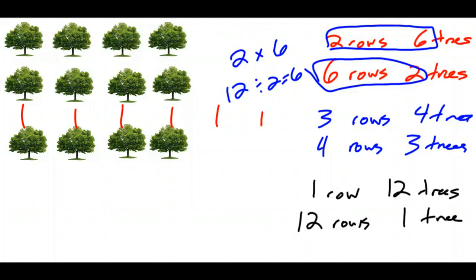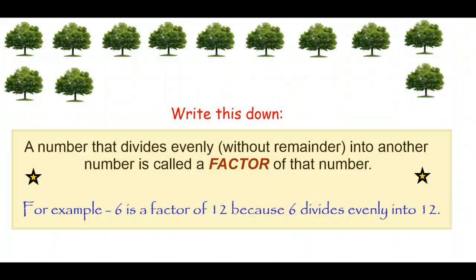Before, we called these divisors when we were talking about divisibility. Now we're going to call them by the alternative name: factors. A number that divides evenly — meaning without a remainder — into another number is called its factor. So for example, six is a factor of twelve because six divides evenly into twelve. It's important to have the direction of that right: six is a factor of twelve.